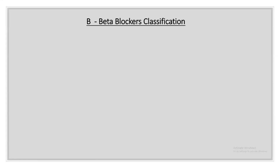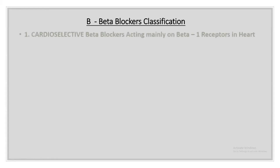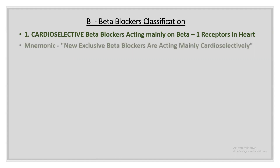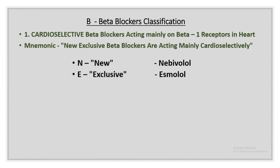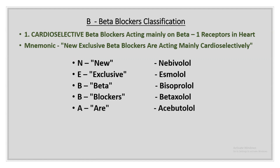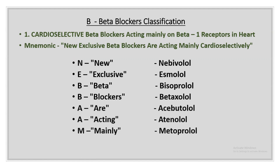Beta blockers are used for hypertension. The cardioselective beta blockers act mainly on beta-1 receptors in the heart. They can be remembered with: 'New exclusive beta blockers are acting mainly cardioselectively.' First letters: N for nebivolol, E for esmolol, B for bisoprolol, B for betaxolol, A for acebutolol, A for atenolol, M for metoprolol, C for celiprolol.